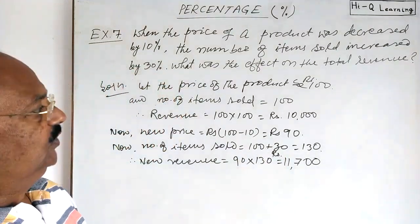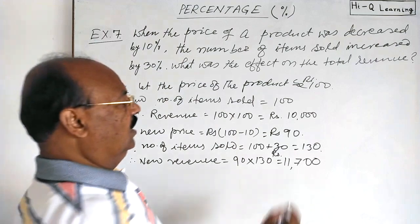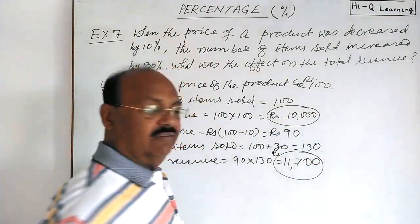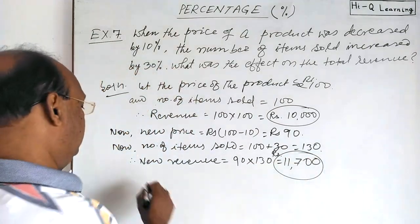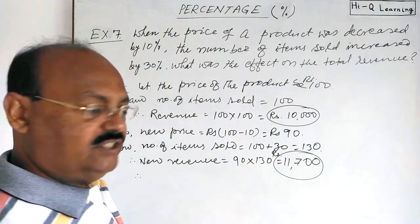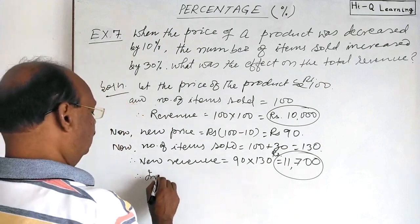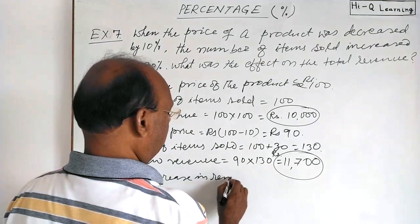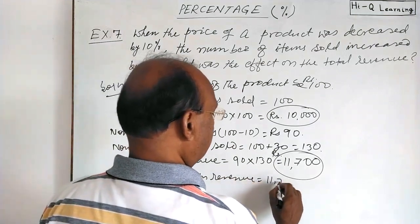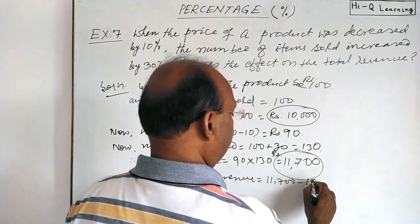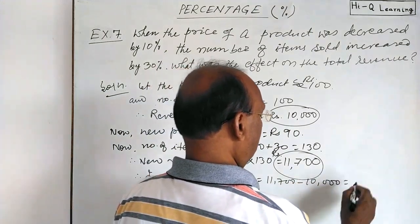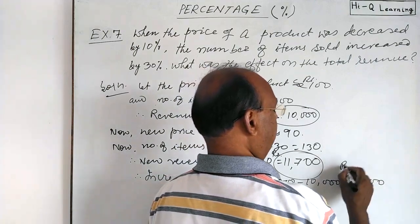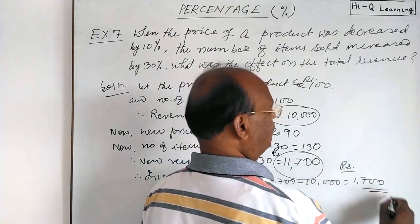So what is the change in revenue? Revenue has increased. Earlier revenue was rupees 10,000, now revenue is rupees 11,700. Therefore the increase in revenue is 11,700 minus 10,000, which is equal to rupees 1,700.